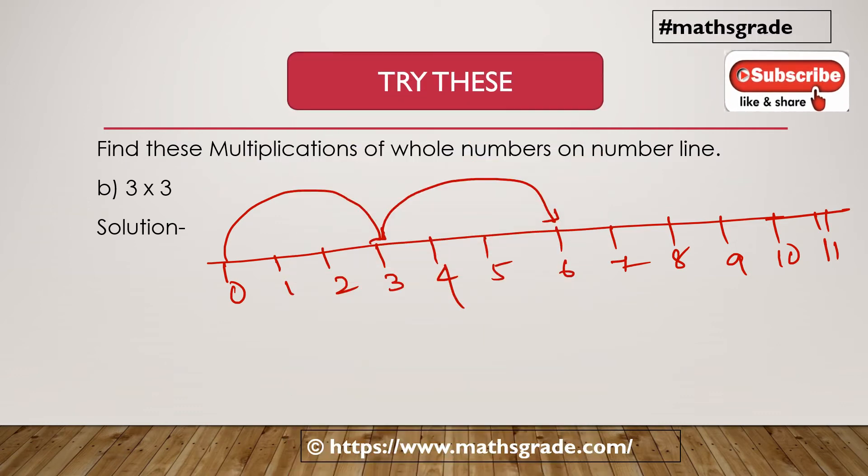That is 6, 3 units, 9. So 3 multiplied by 3, 9. So multiplication, this is the representation of whole number, 3 multiplied by 3, which is 9 on the number line.